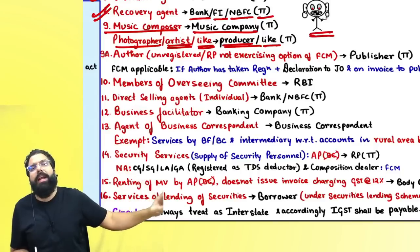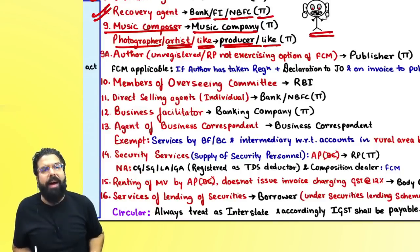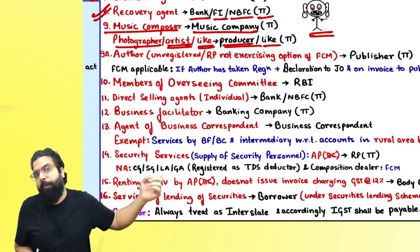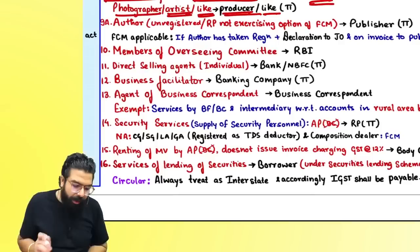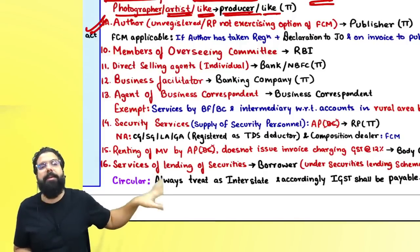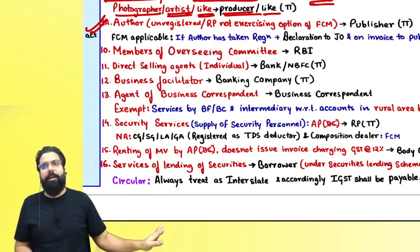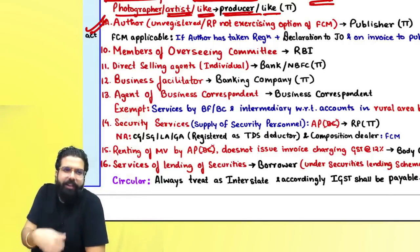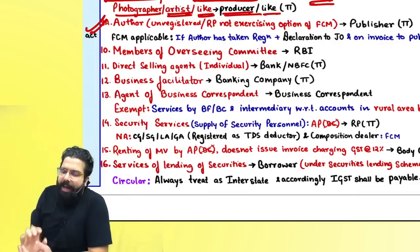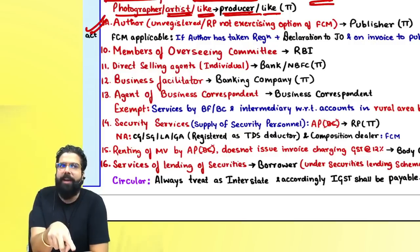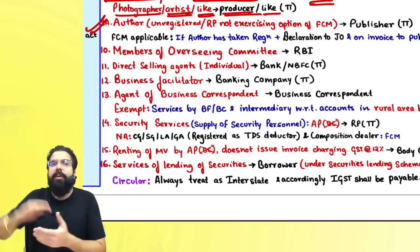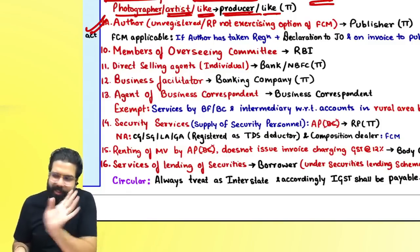If an author gives book publishing rights to a publisher in the taxable territory, the publisher pays GST under RCM. However, if the author gives rights to a publisher outside India, the location of the supplier is in India, recipient is outside India, place of supply is outside India — if payment is in foreign convertible currency and both are not mere establishments of a distinct person, it becomes an export of service, which is zero-rated supply. Authors have the option to pay under forward charge by declaring to the jurisdictional officer and notifying the publisher; the invoice must carry this declaration.